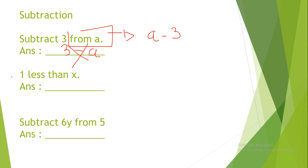Next, 1 less than x. So, the answer is x minus 1. Subtract 6y from 5. So, the answer is 5 minus 6y.